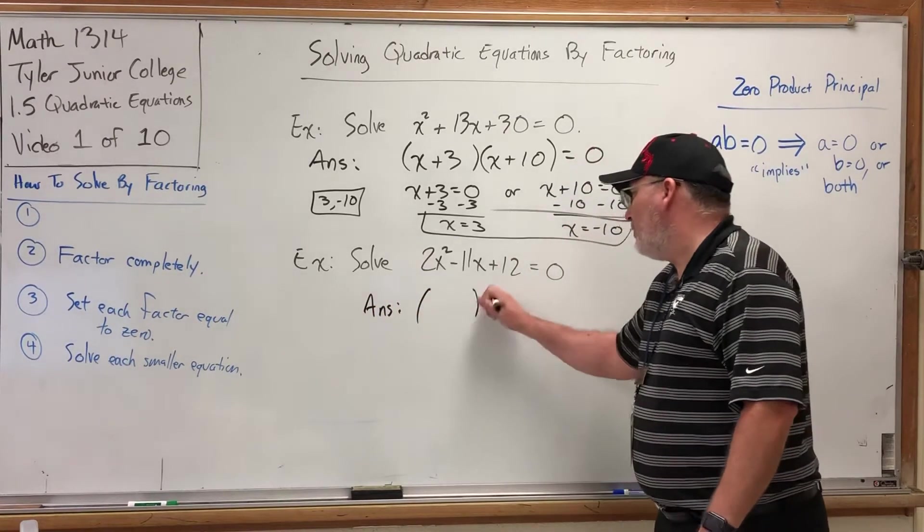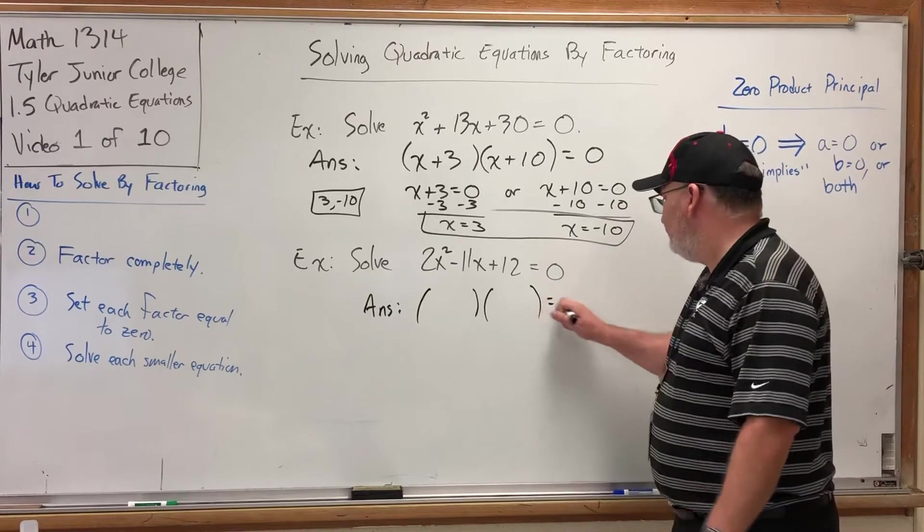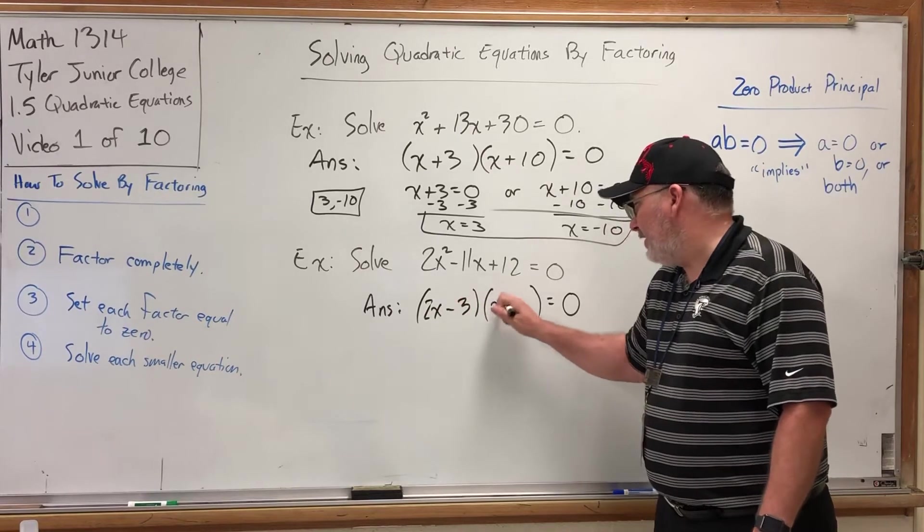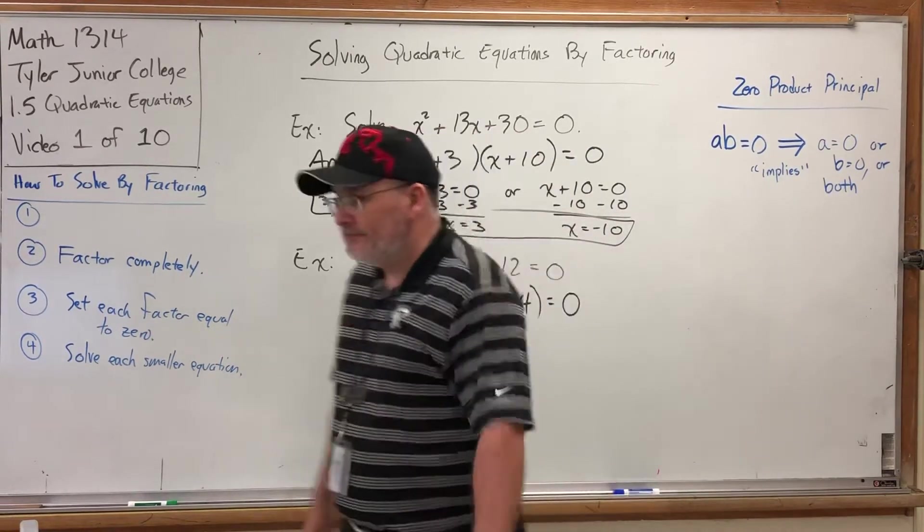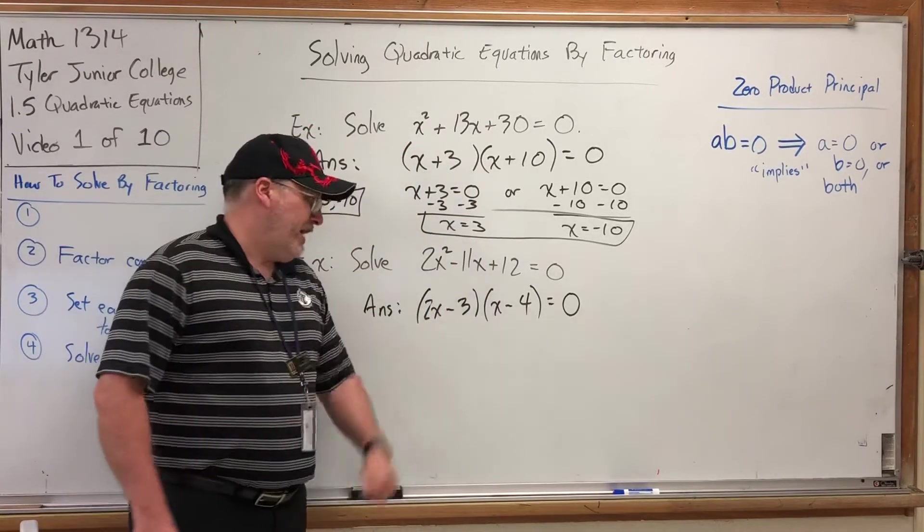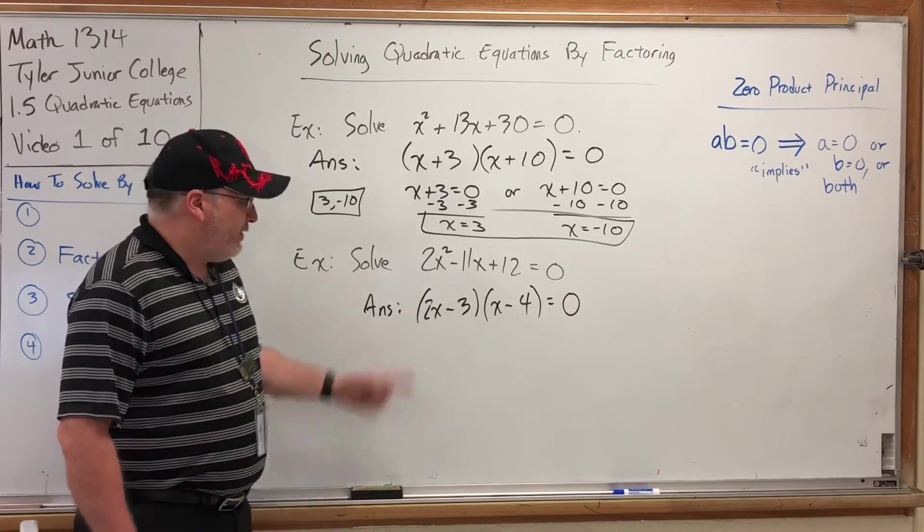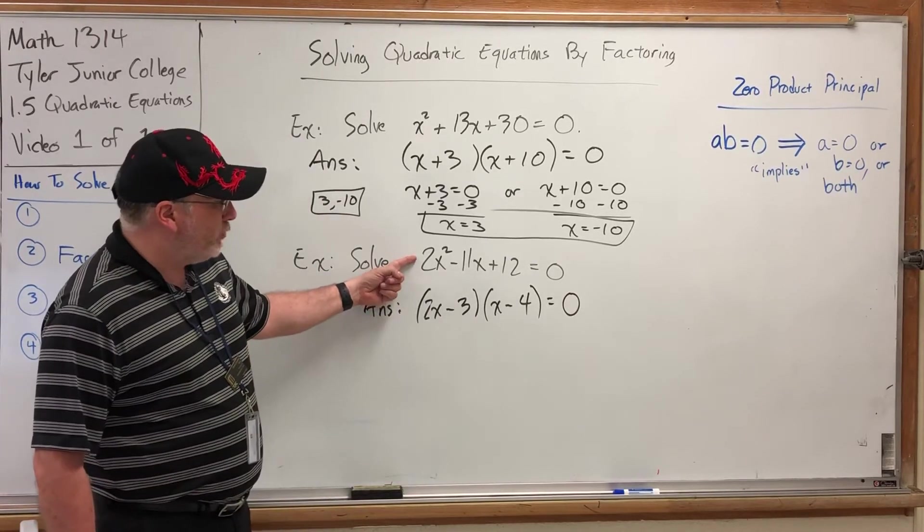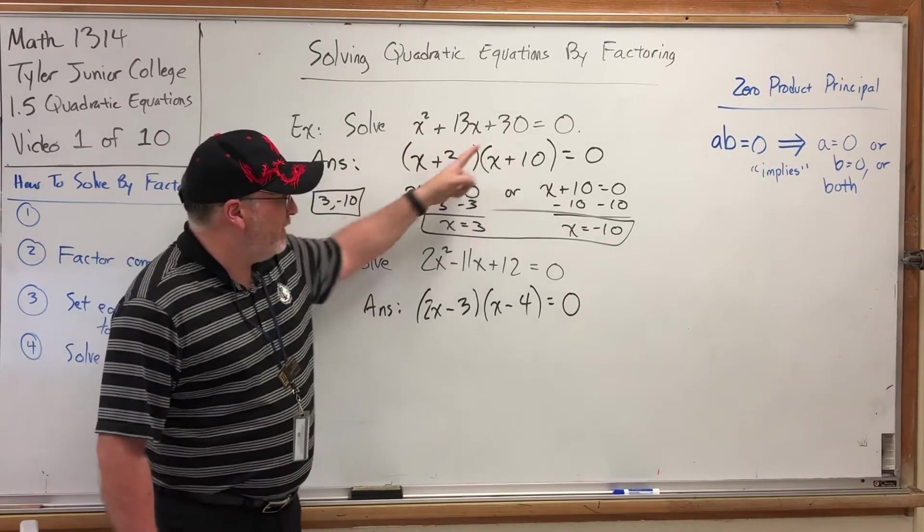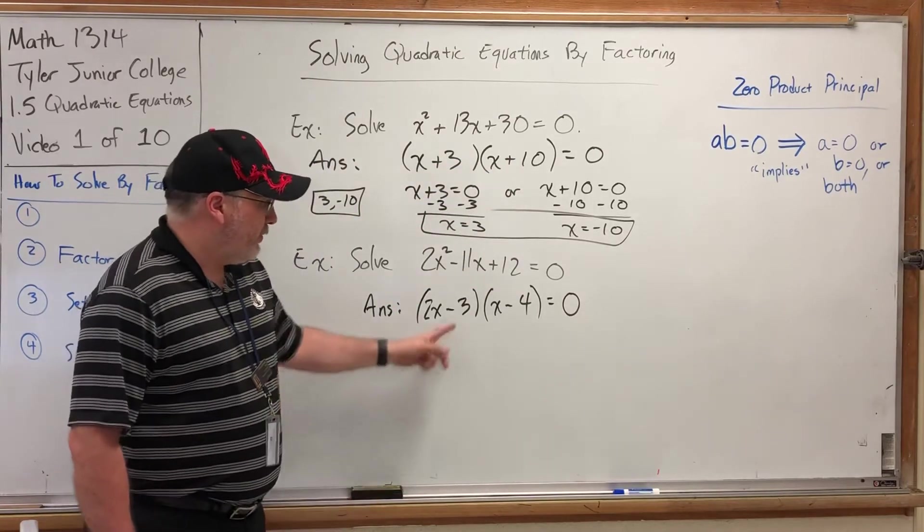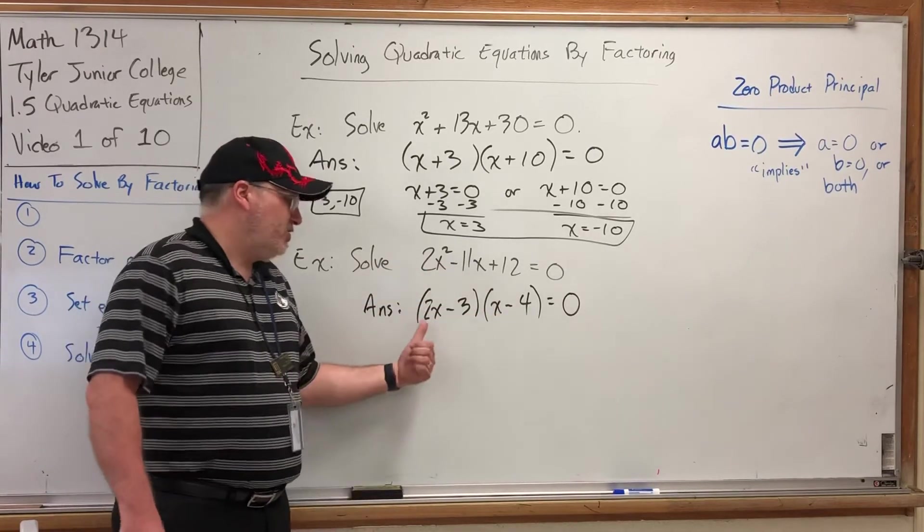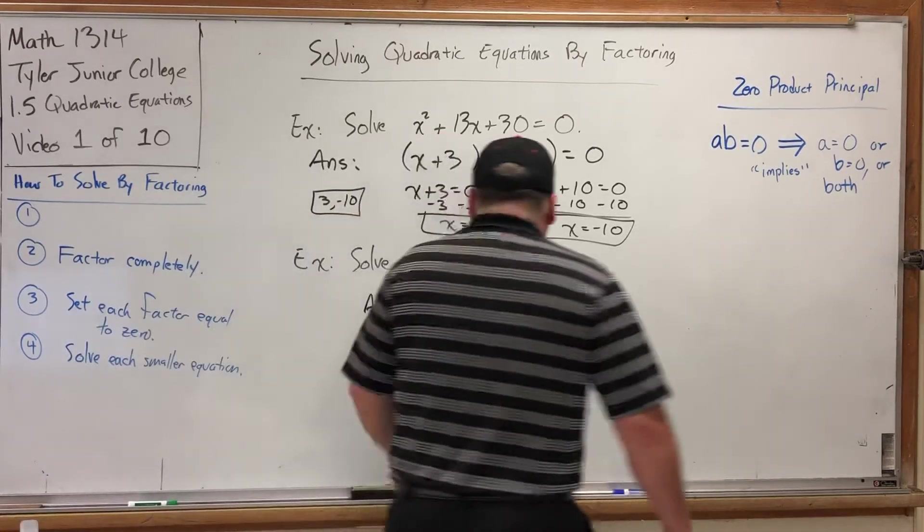First, we need to factor this trinomial. Tri-meaning three terms. It will factor into 2x minus 3 and x minus 4. Why? Watch my videos on reviewing factoring. But if you wanted to check it, foil it out and you'll see that it works. And again, the presence of this 2 in front kind of changes how you approach it. Here with the 1 in front, it was easy. The 2 numbers that add to give 13 but multiply to give 30 were what we needed. But if you notice, these 2 numbers, although they do multiply to give 12, they do not add to give negative 11. That's because this 2 up front throws a bunch of wrench into all that. But let's say you get it factored. Then you're on easy street.